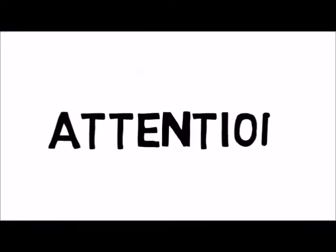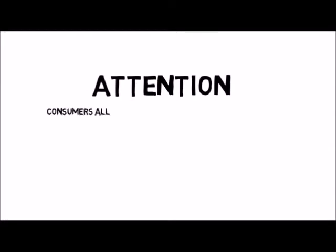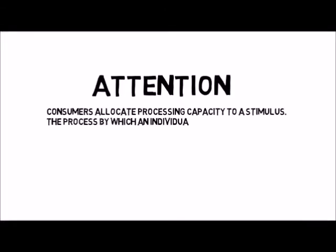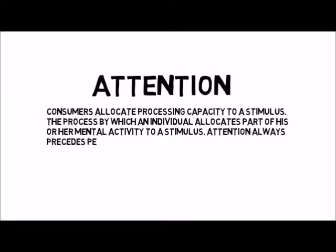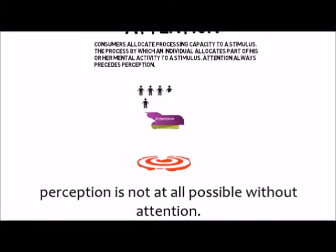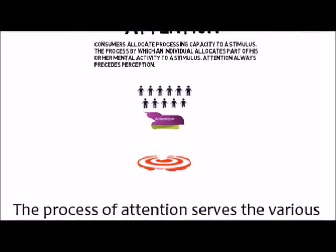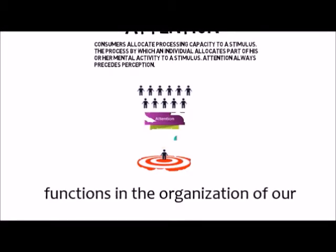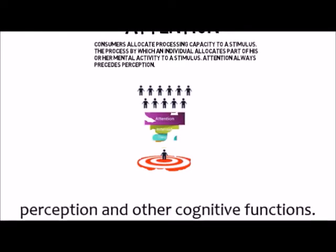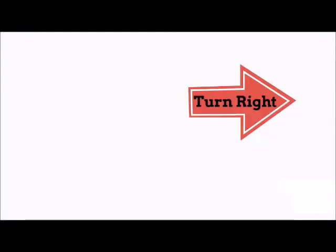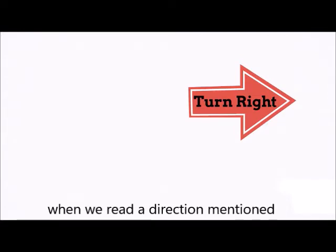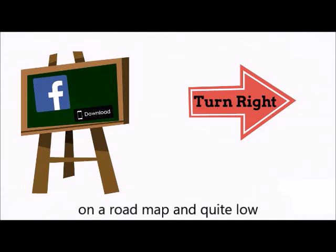Attention — consumers allocate processing capacity to a stimulus. It is the process by which an individual directs his or her mental activity to a stimulus. Attention always precedes perception. Attention is the central process, and perception is not at all possible without attention. The process of attention serves various functions in the organization of our perception and other cognitive functions. For example, our attention may be quite high when we read the directions on a road map and quite low when a commercial comes on TV.